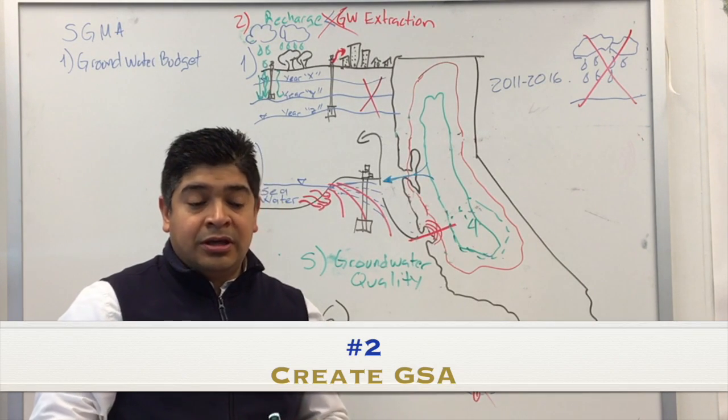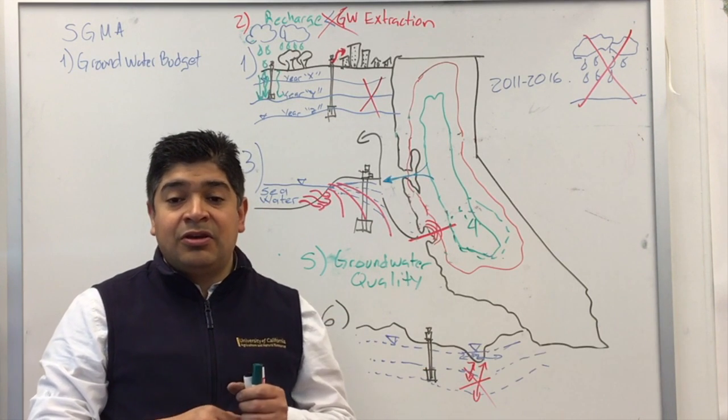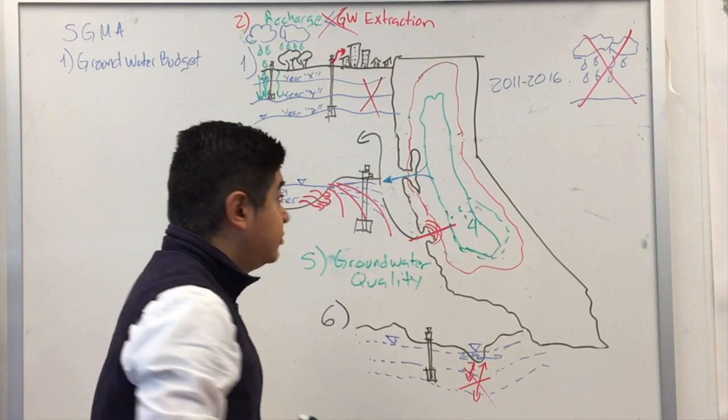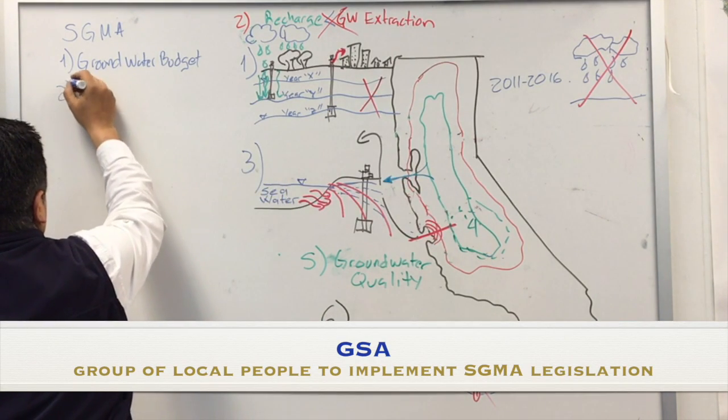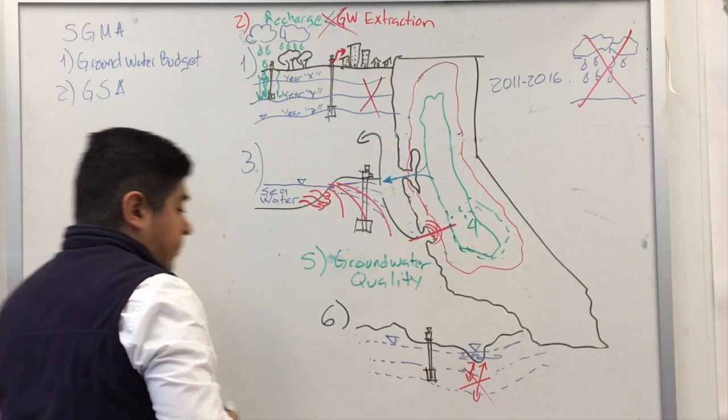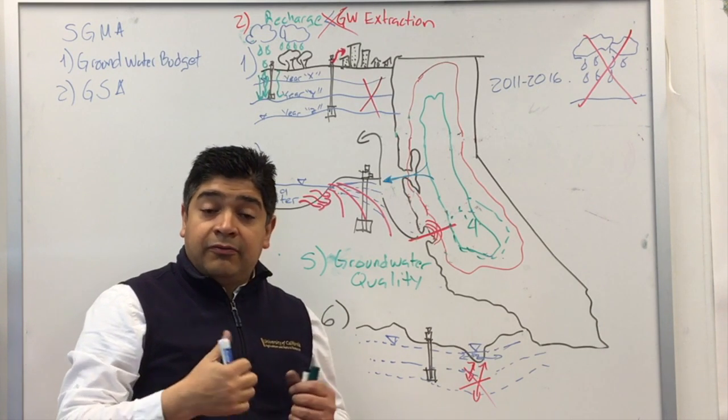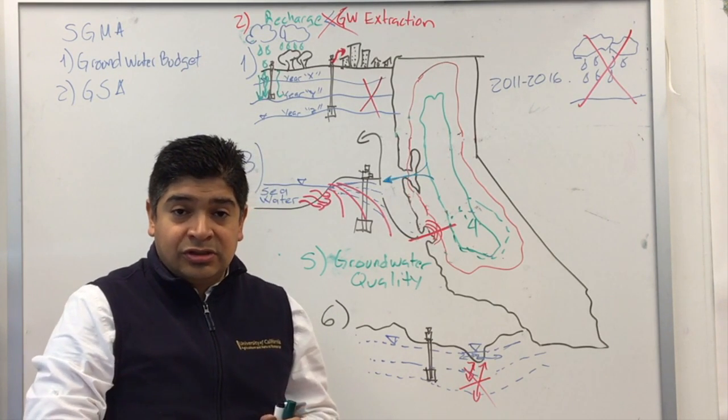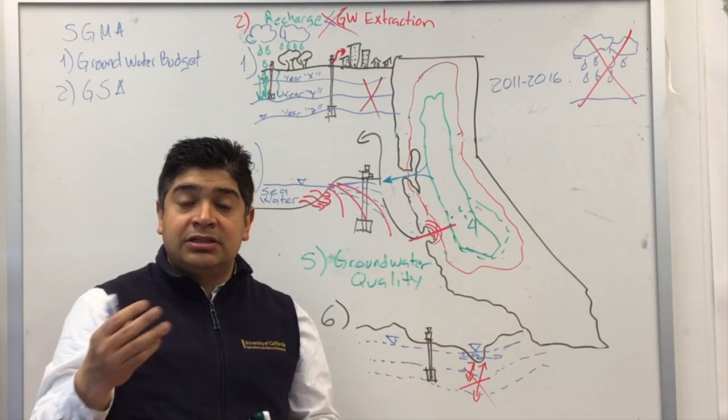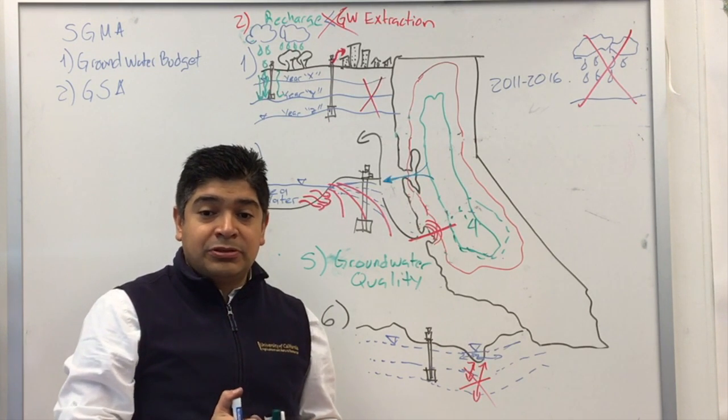Point number two, an agency, a groundwater sustainable agency will be created. So that's the one that will implement the legislation. So this agency, the legislation said that ideally it will be from local institutions. Some people will come from the county offices, local irrigation districts, and local citizens in your area. So keep posted on that.